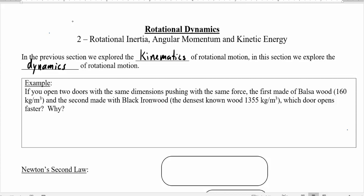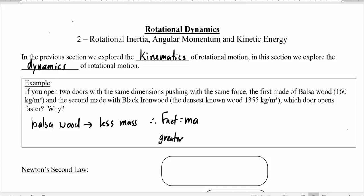Imagine you've got two doors with the same dimensions, and you're going to push them open with the same force. One door is made of balsa wood, and the other is made of black ironwood. Which door opens faster and why? Most people would understand that the balsa wood opens more easily — simply because it has less mass overall, and since F net equals ma, you'll have a greater acceleration.